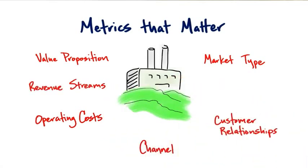And then again for your revenue stream: do you now know with certainty the average selling price, the number of customers per year, achievable revenue, how long it takes to close a sale? And here's the number that actually intersects with one of the ones that your investors are worrying about all the time — how much money are you spending per month, often called burn rate. And not only how much are you burning per month, but when will you run out of money?